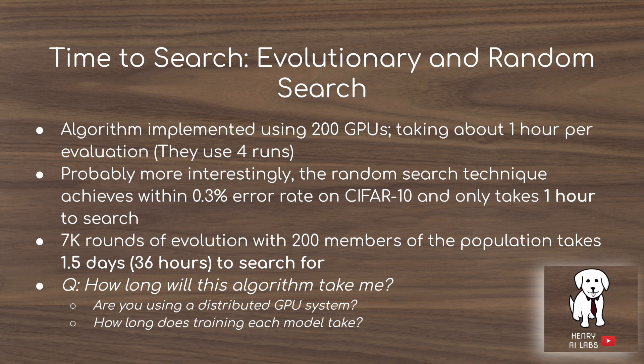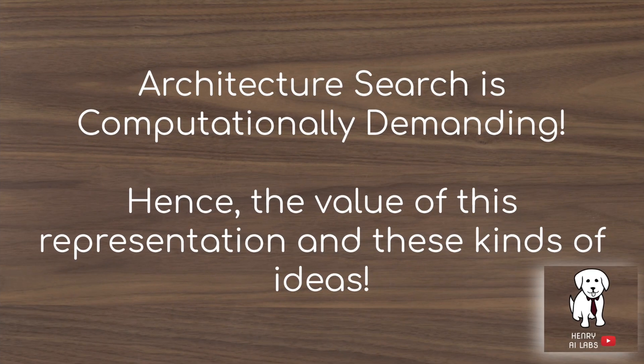If you're interested in using neural evolution for your own computer vision, language model, or deep learning problem, how long the algorithm takes really depends on whether you're using a distributed GPU system. Since this algorithm is asynchronous, it scales well with more GPUs. You also need to consider how long training each model takes. The architecture search is computationally demanding, hence the value of this representation and these ideas to speed it up.